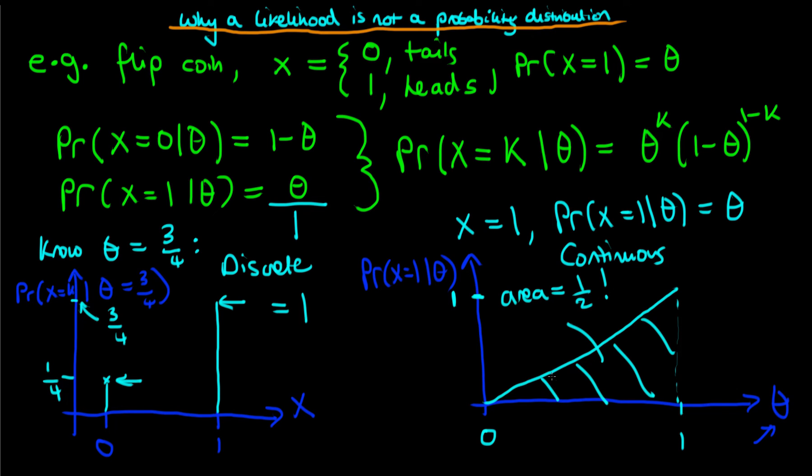So importantly, in this second case, we don't have a valid probability distribution because our integral of our object over all possible values of the thing which we're varying does not equal one. Because what we're dealing with in this second case, where we hold the data constant, our data here is the fact that we obtained one head, and we vary the parameter theta, we term this second type of distribution a likelihood.